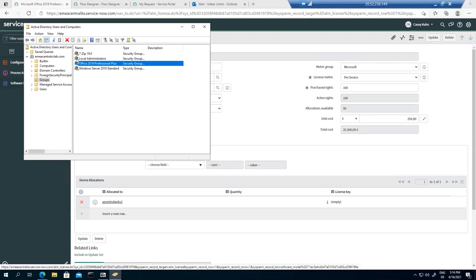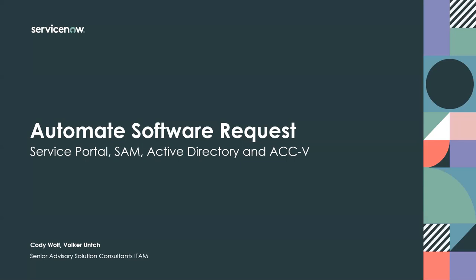That concludes the end-to-end process. We looked at two use cases: requesting 7-Zip, a non-licensable software — going through manager approval, installed via Active Directory group policy, ACCV scans and updates ServiceNow. And requesting Office 2019 Pro, a licensable software — with an extra SAM team approval step, license check, device allocation assigned to the entitlement, and then the same Active Directory installation flow. Thank you, Volker. Thank you, Cody. Thank you, everyone.